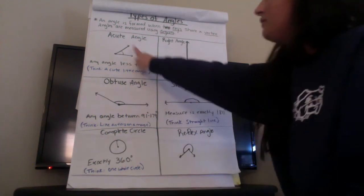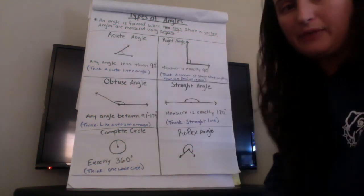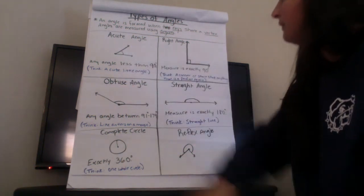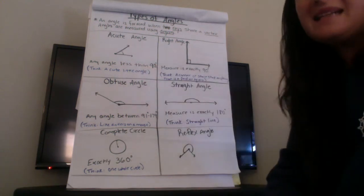So here's an example of an acute angle. That's a type of angle and an acute angle is always less than 90 degrees.